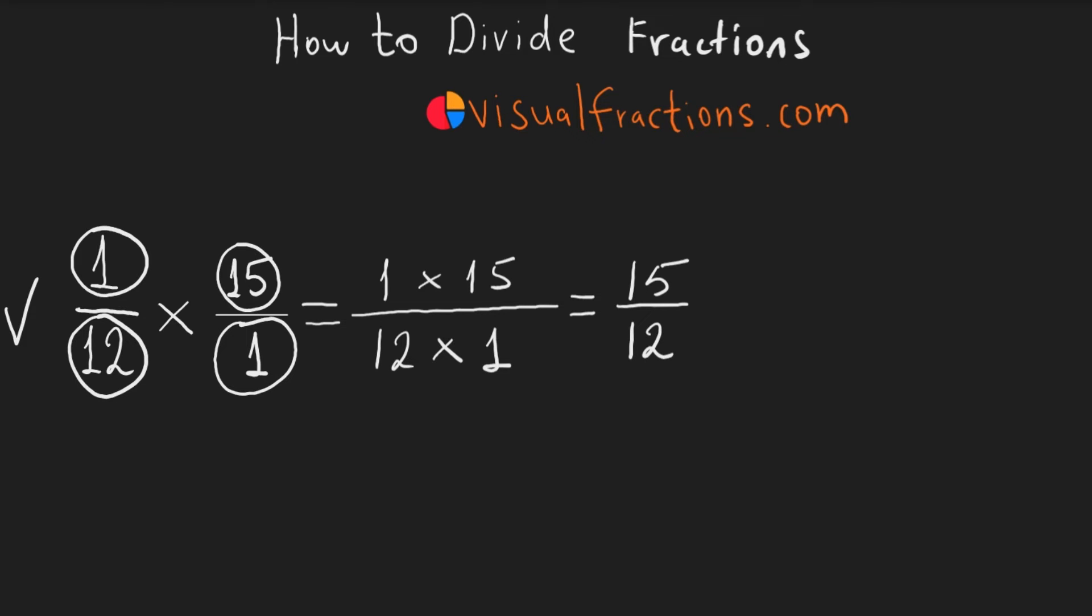Hence, 1/12 divided by 1/15 equals 15/12. But we're not finished yet. This fraction can be simplified. Both the numerator and the denominator are divisible by 3, the largest number that can divide both. 15 divided by 3 is 5. 12 divided by 3 is 4.